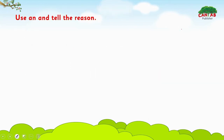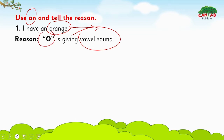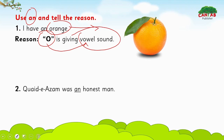Now let's go through examples. The first example is: 'I have an orange.' Why is 'an' used? Because the word starts with 'o,' which is a vowel, and 'orange' gives a vowel sound — that is why 'an' is used. The next example is: 'Quaid-e-Azam was an honest man.' Why is 'an' used here?